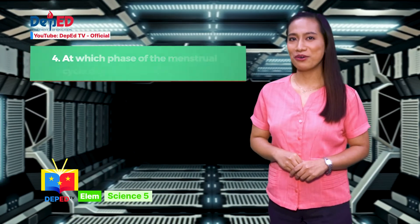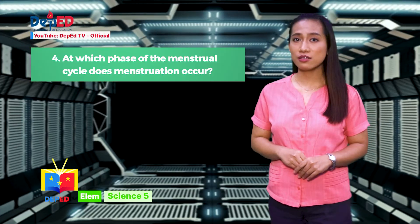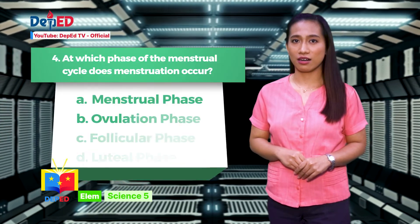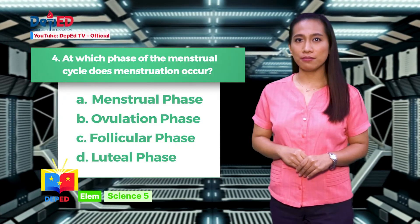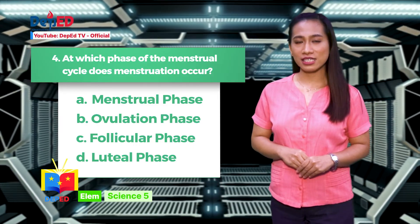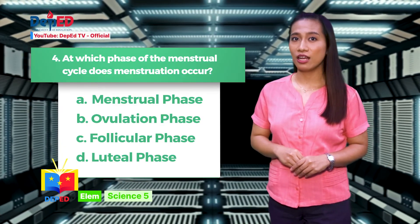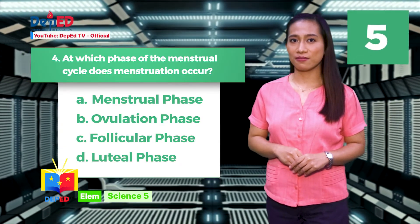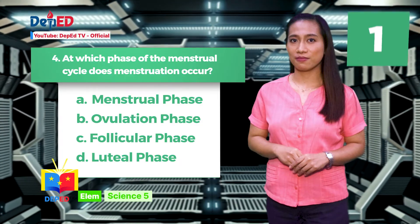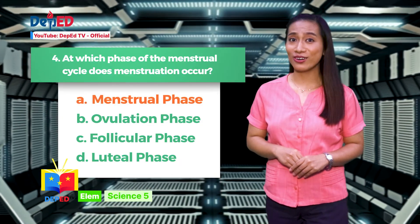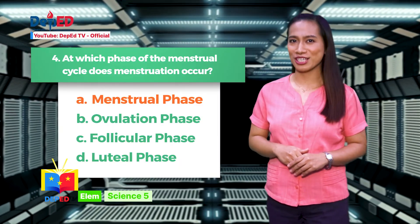Number four: At which phase of the menstrual cycle does menstruation occur? A. Menstrual phase, B. Ovulation phase, C. Follicular phase, D. Gluteal phase. If your answer is letter A, Menstrual phase, give yourself a point.